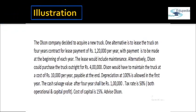Let's do one example. The Olsen company decided to acquire a new truck. One alternative is to lease the truck on a four-year contract for lease payment of Rs. 1,20,000 per year, with payment to be made at the beginning of each year — so payments occur at year 0, 1, 2, and 3. The lease would include maintenance, so no additional maintenance cost. Alternatively, Olsen could purchase the truck outright at Rs. 4,00,000. If bought, Olsen would need to maintain the truck at a cost of Rs. 10,000 per year. Depreciation at 100% is allowed in the first year.